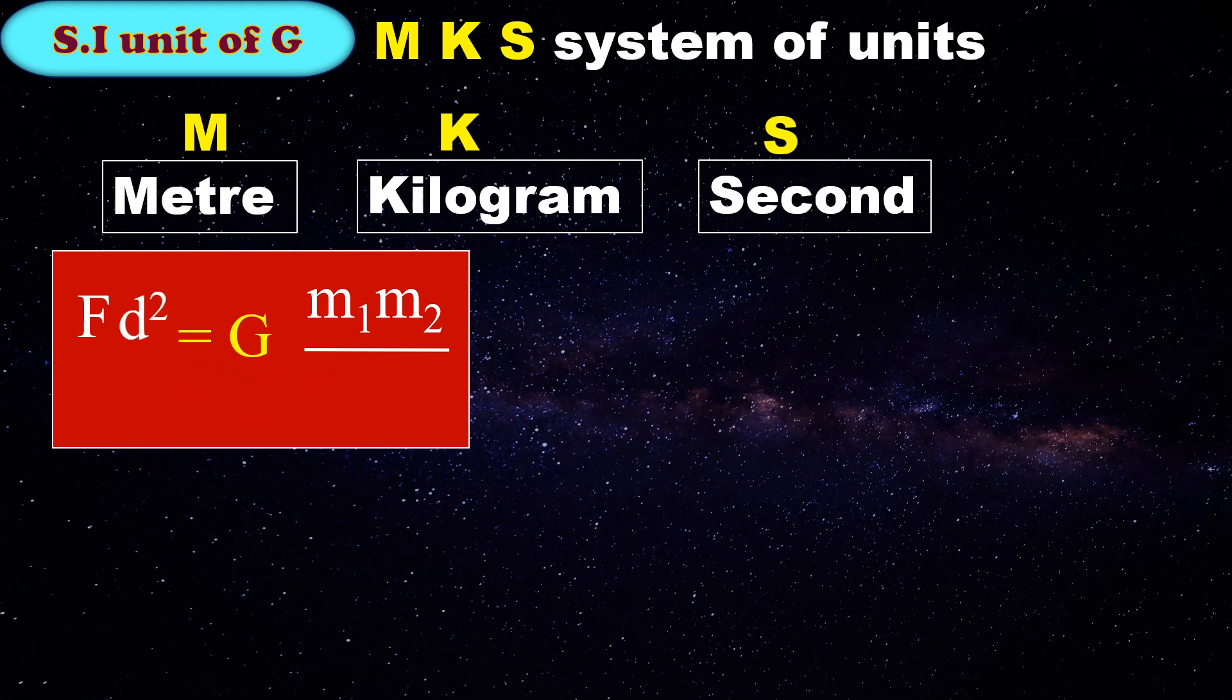Firstly, we will shift D² from the denominator to the numerator of the left-hand side. Then, we will shift M1 and M2 from the numerator to the denominator of the left-hand side.